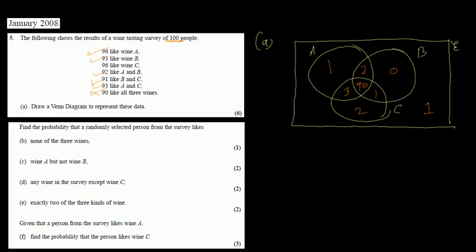The rest should be straightforward. For part B we find the probability using event divided by sample space. The first question asks for the probability of liking none of the three wines. The sample space is 100 people, and there is only one person outside all sets, so the answer is 1/100.